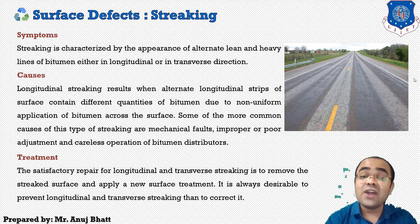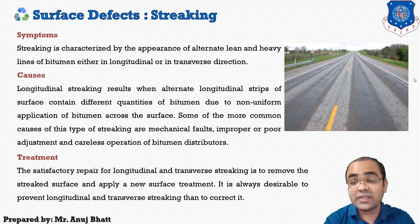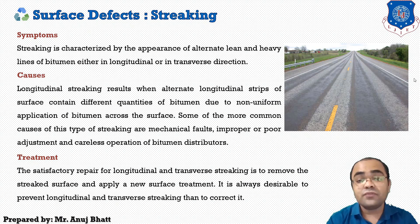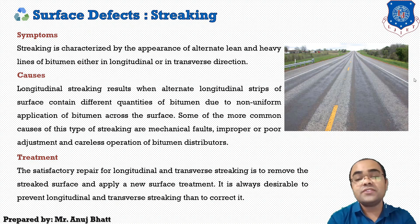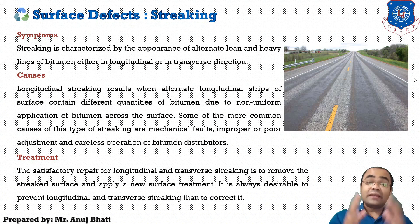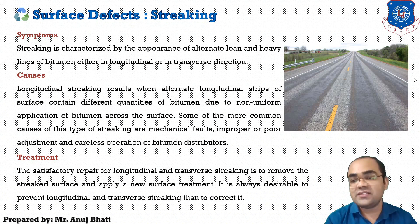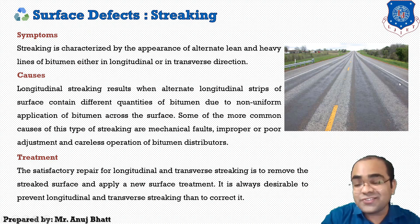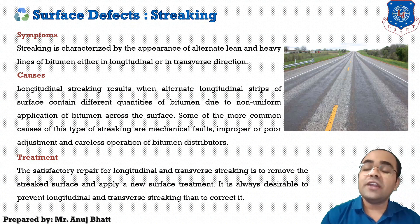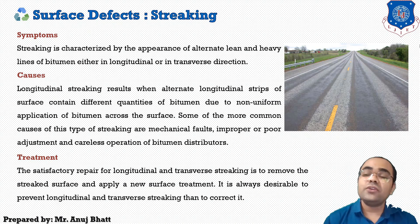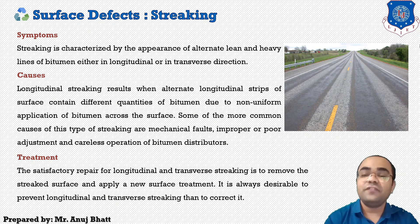All these causes can also result in transverse streaking. Transverse streaking may also be caused by spots in the bitumen spray from the distribution spray bar, which could be a result of mechanical faults in the distributor. Transverse streaking may result in corrugation in the pavement surface. It may also be caused by using a non-uniform grade of bitumen, or if the bitumen is not sprayed homogeneously.